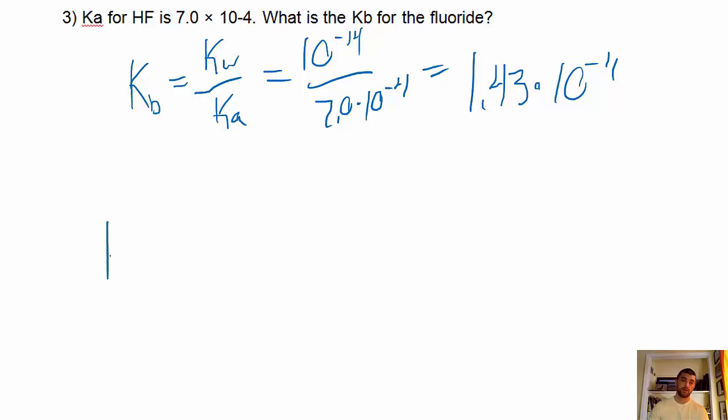Alright, so the helpful formula to remember is the Kw equals Ka times the conjugate acid or base Kb. So, that's it. See you in class. Bring questions.